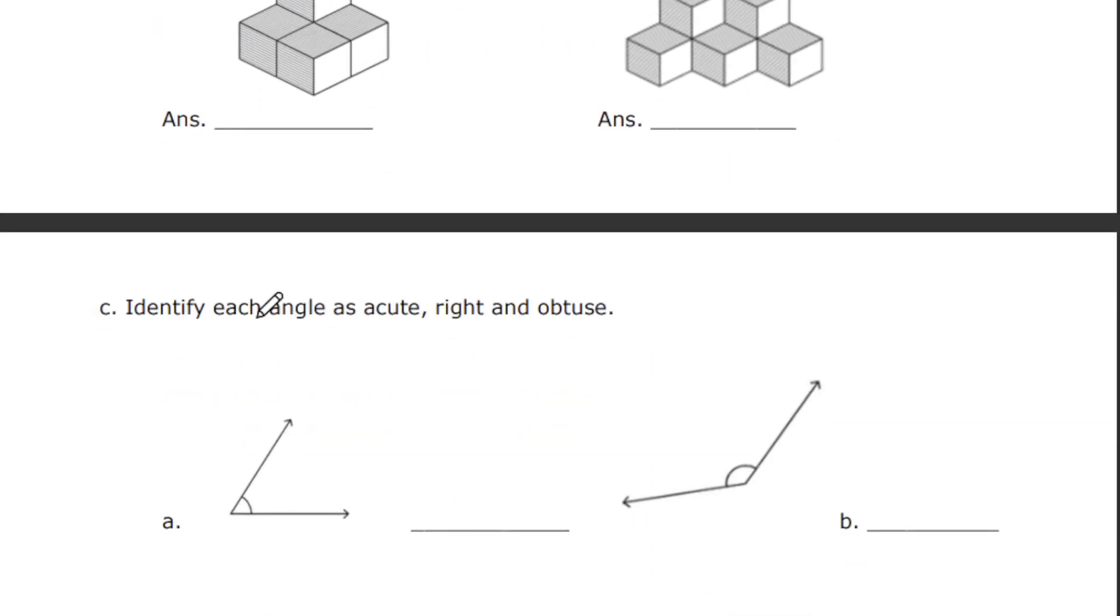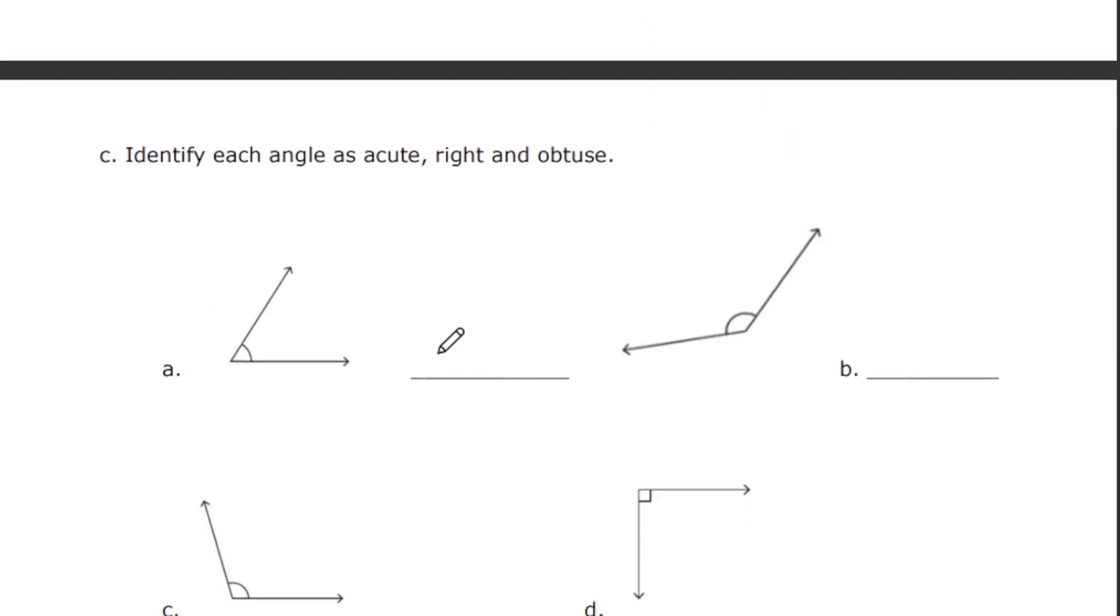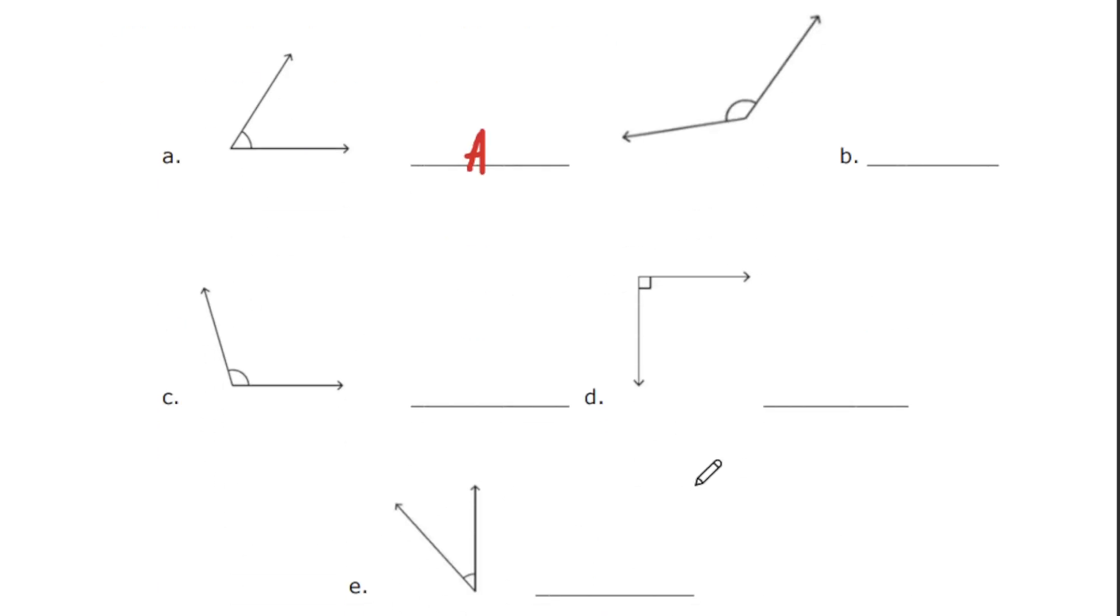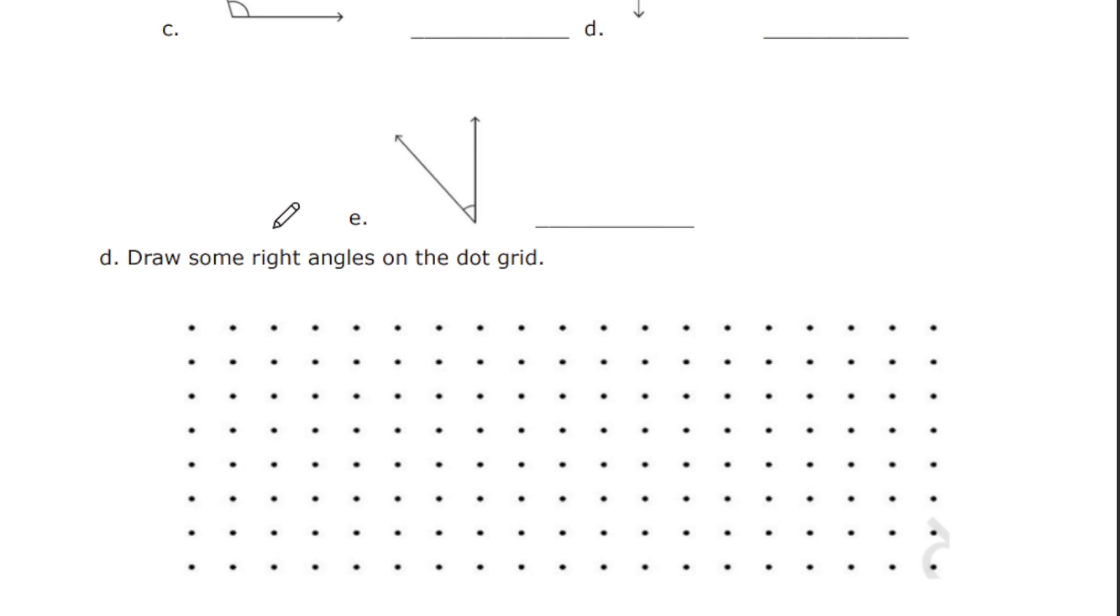Next we have identify each angle as acute, right and obtuse. You have to find and write the answer here in the given blanks. I will write A. This is an answer. You have to write B, C, D and E. Next, draw some right angles on the dotted grid. We have given a dotted grid here. You have to draw some right angles. Any right angles you can draw.